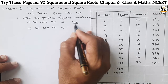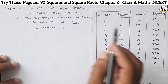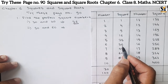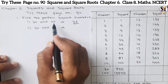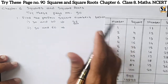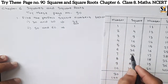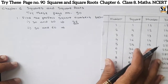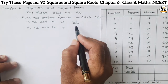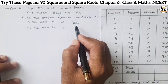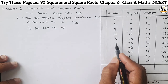Only one number lies between 30 and 40 which is a perfect square, and that is 36. It is the square of the number 6. Are you getting it? It is a perfect square number — the square of number 6.